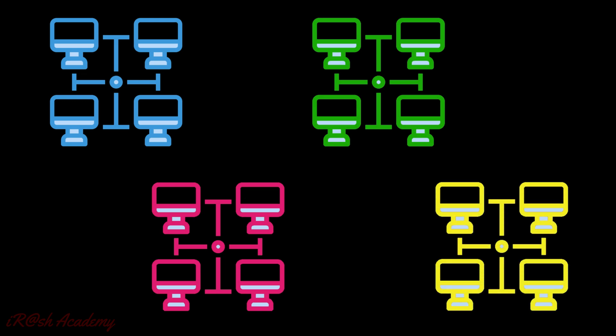Initially, all the computer networks were purely vendor specific. That means the specific computer from a vendor can communicate together, but it cannot communicate with the computer from another vendor.